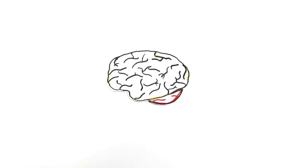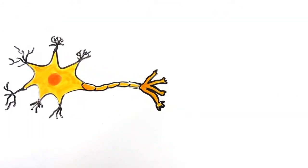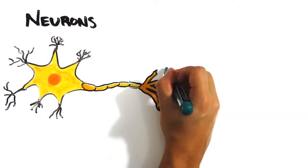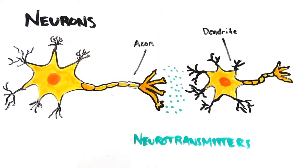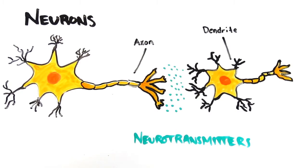First, we need to understand how the brain functions. Your neurons are the cells that process information in the brain. By releasing chemicals called neurotransmitters, from the axon of one neuron to the dendrite of another, they change the electrical charge of the receiving neuron, consequently exciting or inhibiting it. If excited, the signal is passed on.